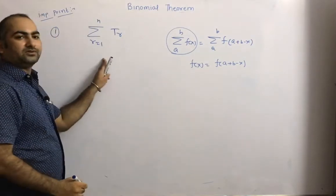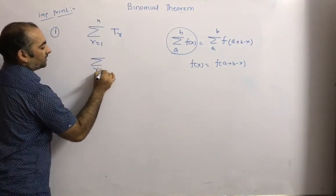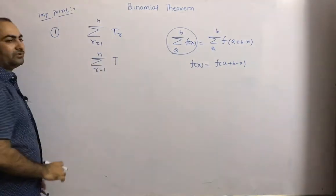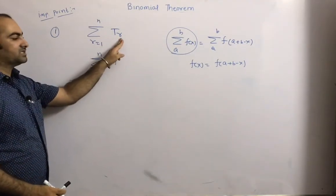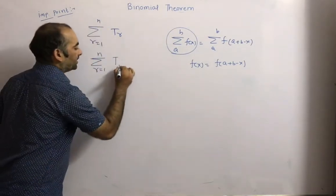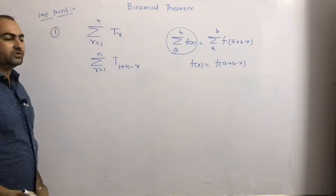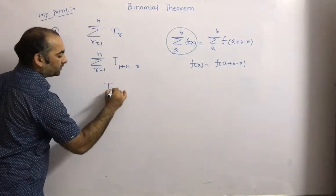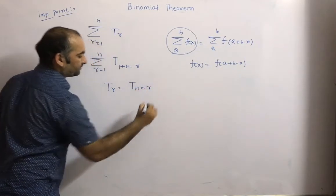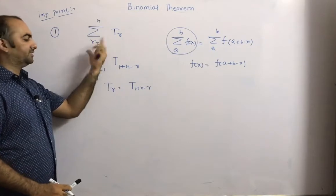Applying the same property here: sigma r=1 to n of t_r, instead of r we write 1+n-r. So if t_r equals t_{1+n-r}, then we can say that this series is a symmetrical series.